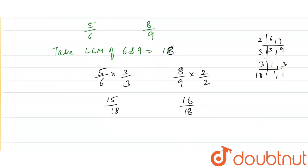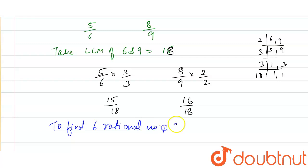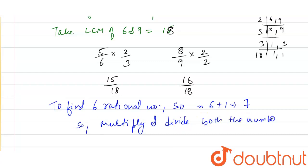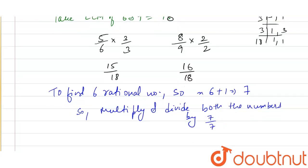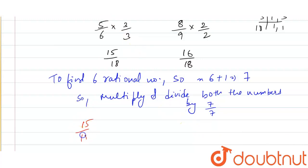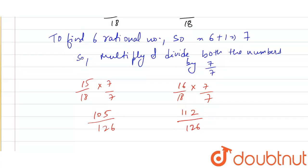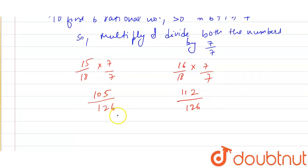Now we have to find 6 rational numbers. Since we need 6, we add 1 to get 7, then multiply and divide both numbers by 7/7. So 15/18 multiplied by 7/7 gives 105/126, and 16/18 multiplied by 7/7 gives 112/126. The 6 rational numbers lie between 105/126 and 112/126.